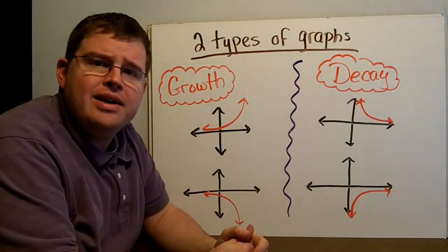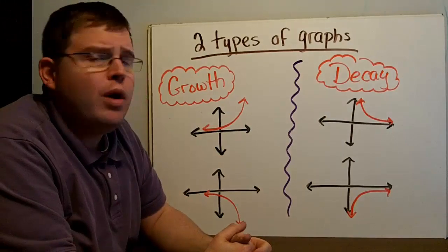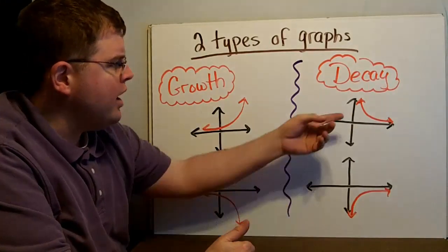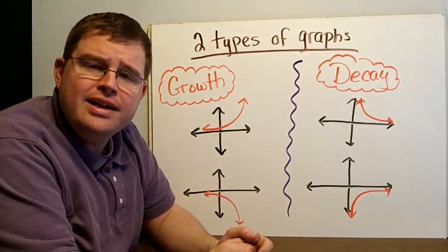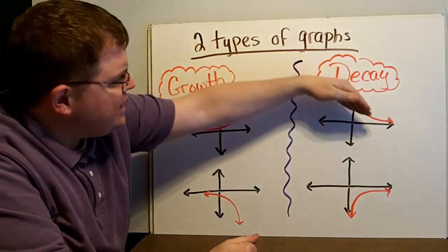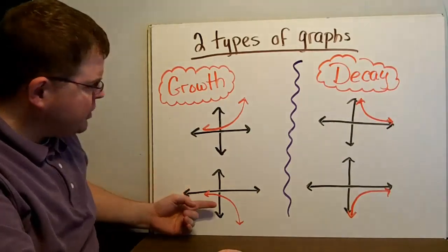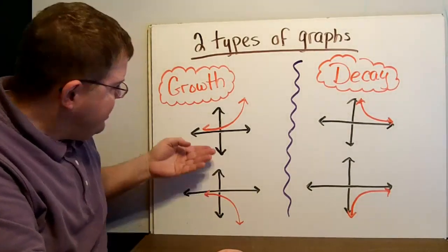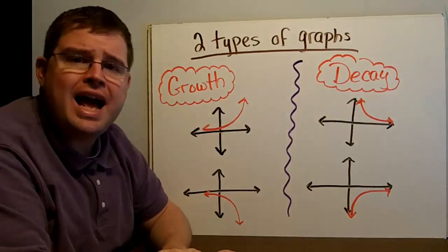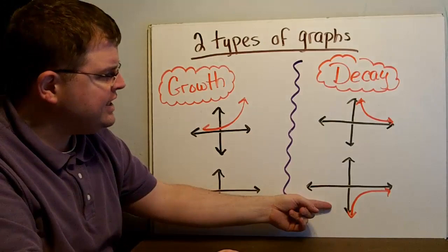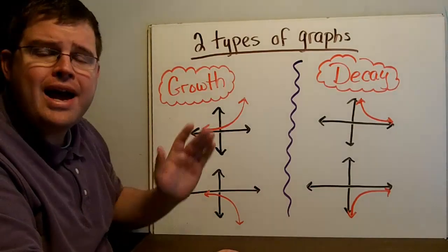Decay, on the other hand, is when a number gets smaller and shrinks, and you get closer to the axis. For example, 1-half to the x: 1-half to the 0 is 1, 1-half to the 1st is 1-half, to the 2nd is 1-fourth, to the 3rd is 1-eighth, and it keeps getting closer and closer. When you stick a negative number in front, it flips the graph over the axis — that's called a reflection. Both flipped versions are still considered decay or growth respectively, based on whether they're moving toward or away from that axis.